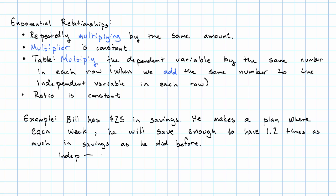So again, our independent variable is the time in weeks and our dependent variable is the amount of savings. What do we see in the table? At the beginning, he has $25.